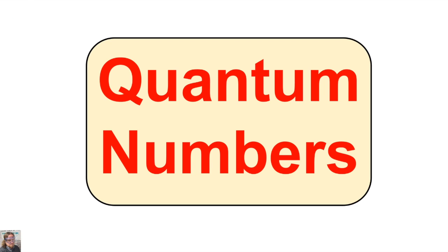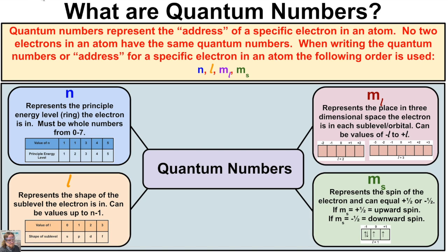Hey you guys, this is Mr. Millings, and in this video we are going to learn about quantum numbers. In an earlier video we learned how to write electron configurations and draw orbital diagrams for different atoms on the periodic table. Now we are going to be expanding on that and learning about quantum numbers. A quantum number represents the address of a specific electron in an atom.